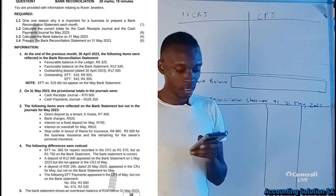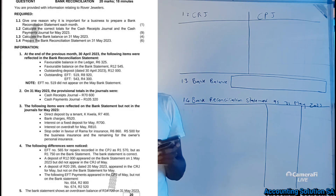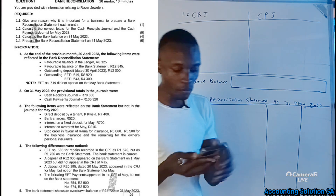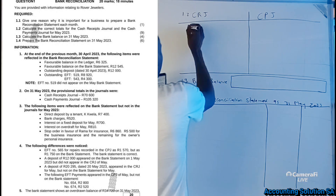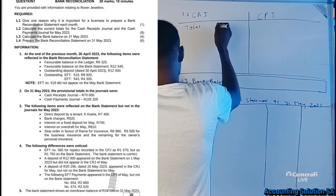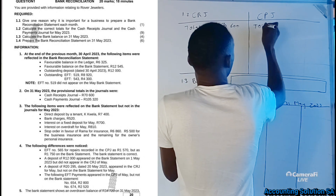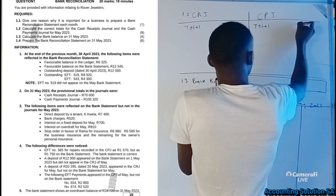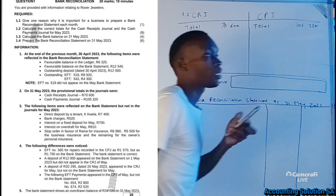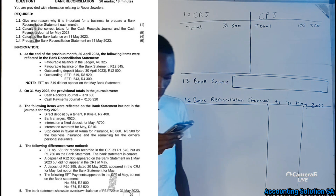On 31 May 2023, the provisional totals in the journals were: cash receipts journal total of R70,600 and cash payment journal total of R105,320. These are before adjustments that we are going to make. Transaction number three: a direct deposit by tenant K. Quaila of R7,400.